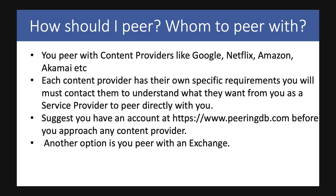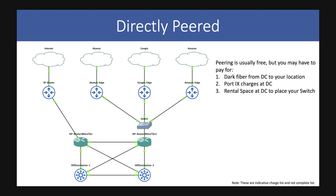Before approaching any content provider, I suggest registering yourself on peeringdb.com — that's where content providers will look to see what your network is like before agreeing to peer with you. The other option, if you don't want to approach them directly, is to go through an exchange. If you peer directly with a content provider, you'll need space in a data center where the content providers are present, place a switch or router there, and run a dark fiber from that data center back to your network.